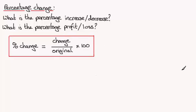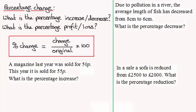So I've got three examples here which I'll work through. These are very common kinds of examples that you get which should demonstrate this concept. In the first one, we've got a magazine last year was sold for 50p. This year it's sold for 55p. What is the percentage increase, or we could say percentage gain, because clearly this has gone up in price.